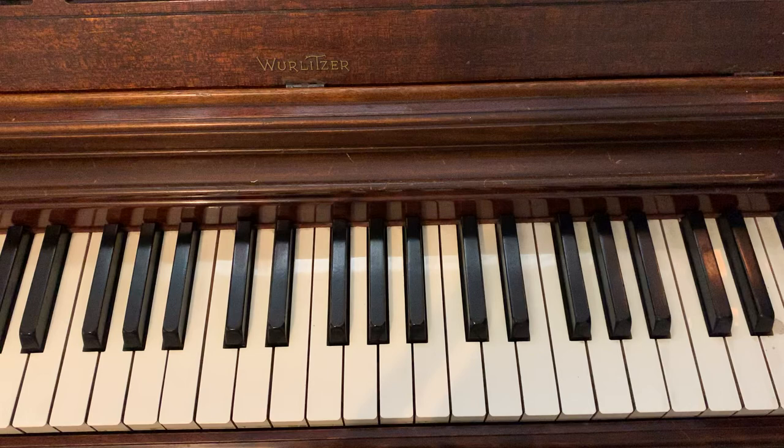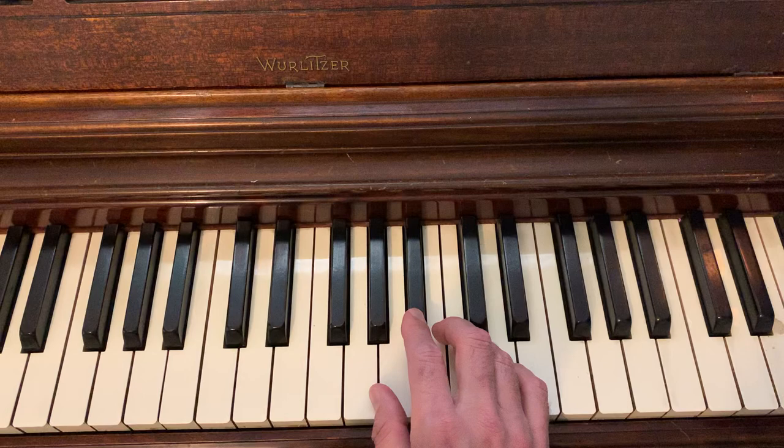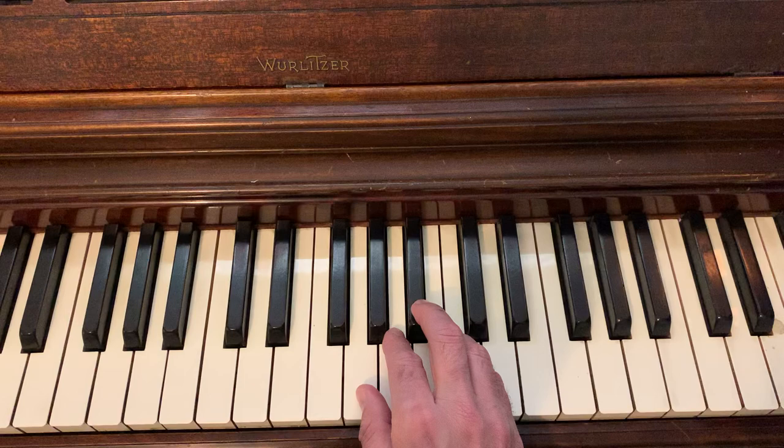Hi there, this is the right hand scale fingering for the C major bebop scale. Now the difference between the major and the dominant bebop is you have this chromatic walk down from the C through the major seventh and the flat seventh here for the dominant.